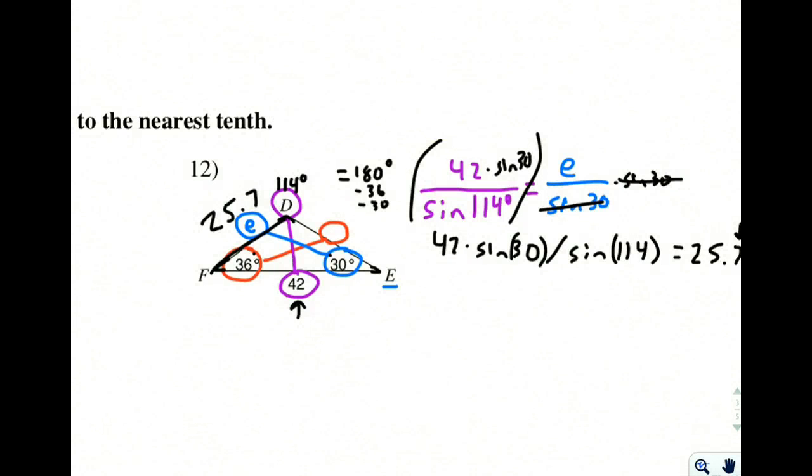I would always start with the one that we knew, the pair that we knew originally, the purple one. So 42 over sine 114. The reason you wouldn't want to start with, let's say,